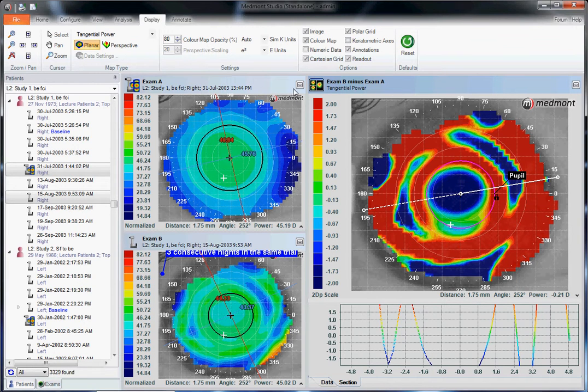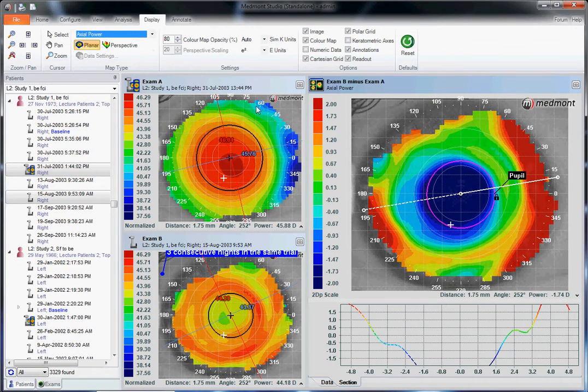So use the axial and the tangential map to determine refractive change, treatment zone position, treatment zone size, and tangential map for lens position.